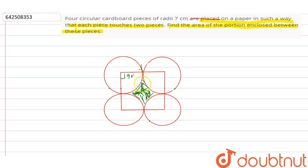We need to find this enclosed area. Now we know the radius of the circle